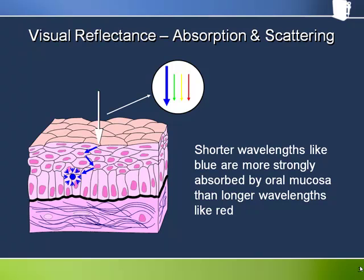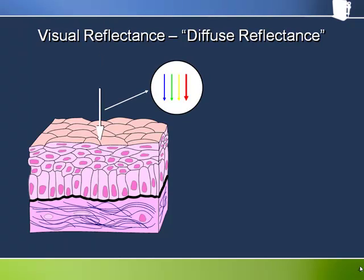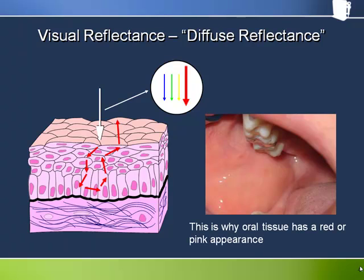Short wavelength light, like blue light, is absorbed very strongly by mucosal tissue — not many blue photons make it back outside the tissue without getting absorbed first. Red light, on the other hand, is much less strongly absorbed by mucosal tissue, so a lot of red photons manage to re-emerge from the tissue and make it back to our eye. This is why mucosal tissue seems to us to be predominantly red or pink in appearance.